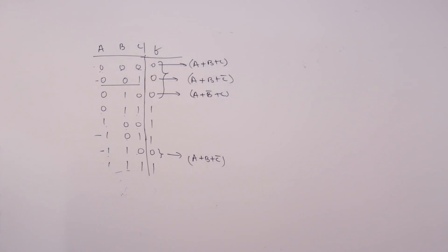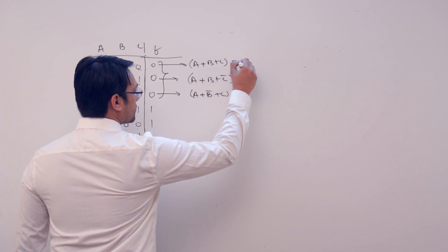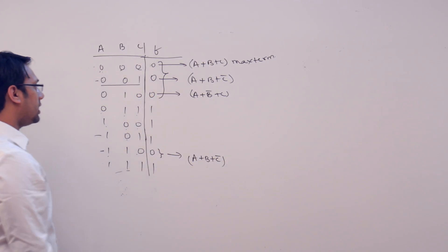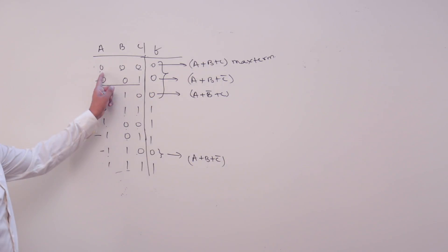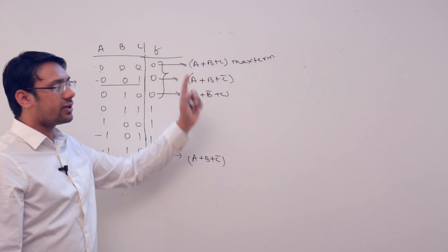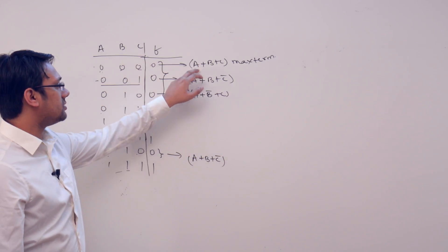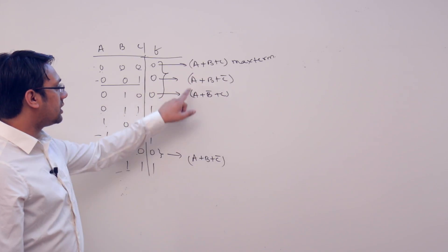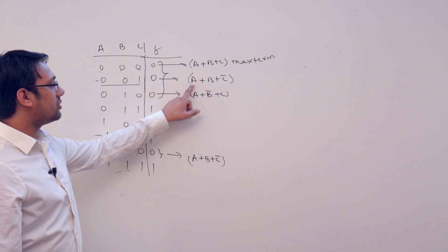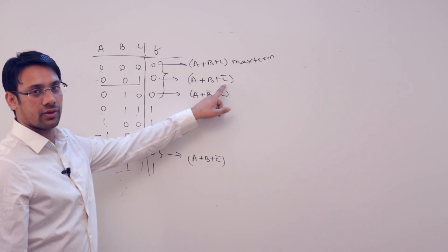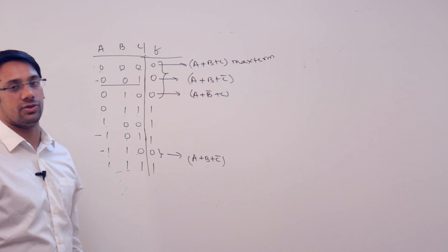Why I am representing these values like this is — this is a max term, and this max term will assume a value 0 only if we pass 0, 0, 0. That means it will have a value 0 only if we pass 0 in a, 0 in b, as well as 0 in c. Here, it will assume a value 0 only if we pass 0, 0, 1 — then only this value will be 0.